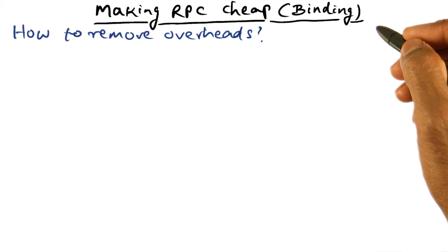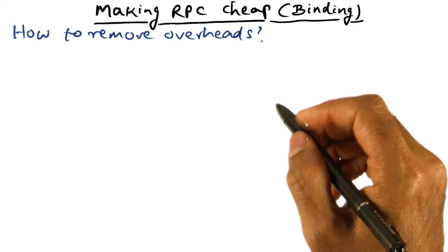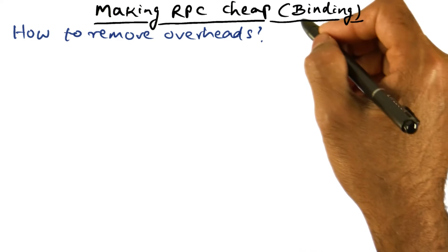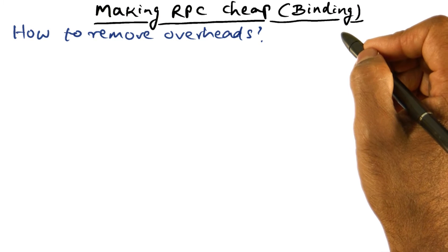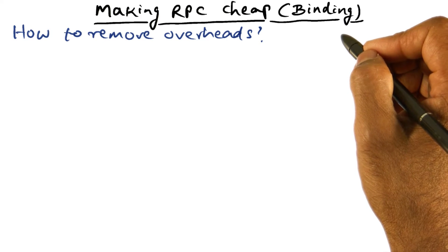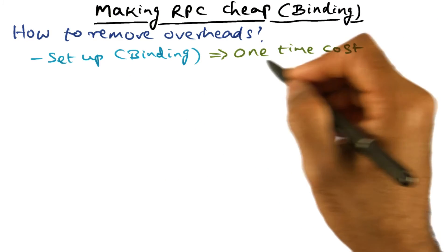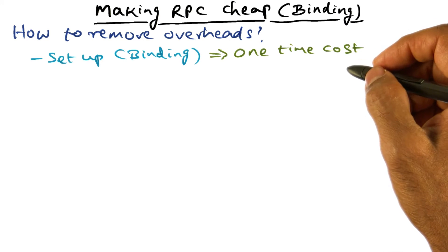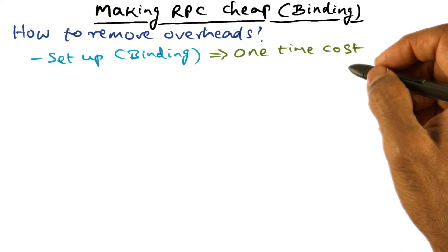Setting up the relationship between the client and the server on the very first call needs to be done exactly once. That process is what is called binding — binding the client to the server. That is done once; the first call is when that binding happens. Since the setup or binding is done only once, it's a one-time cost. It's okay if it is more expensive than the actual calls — we can afford to make binding more time consuming.